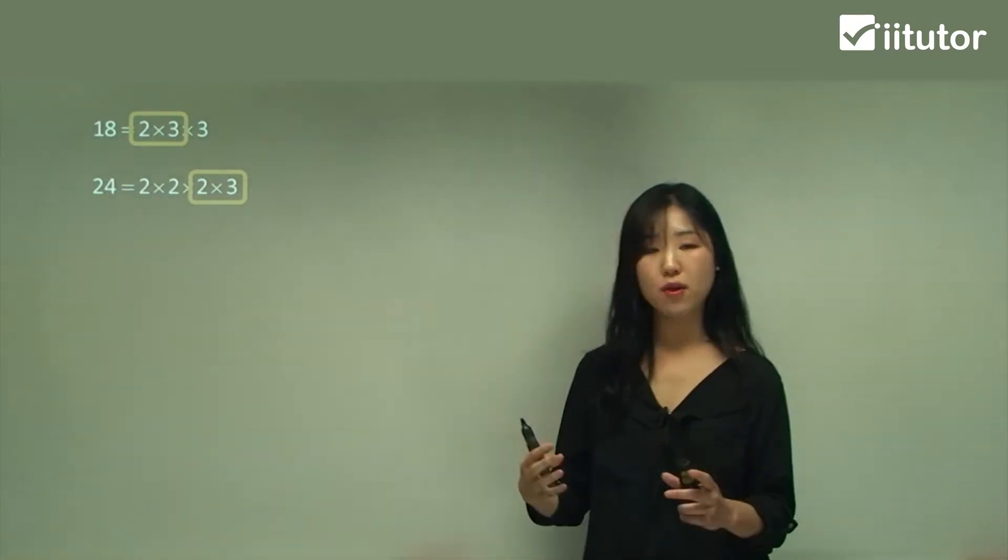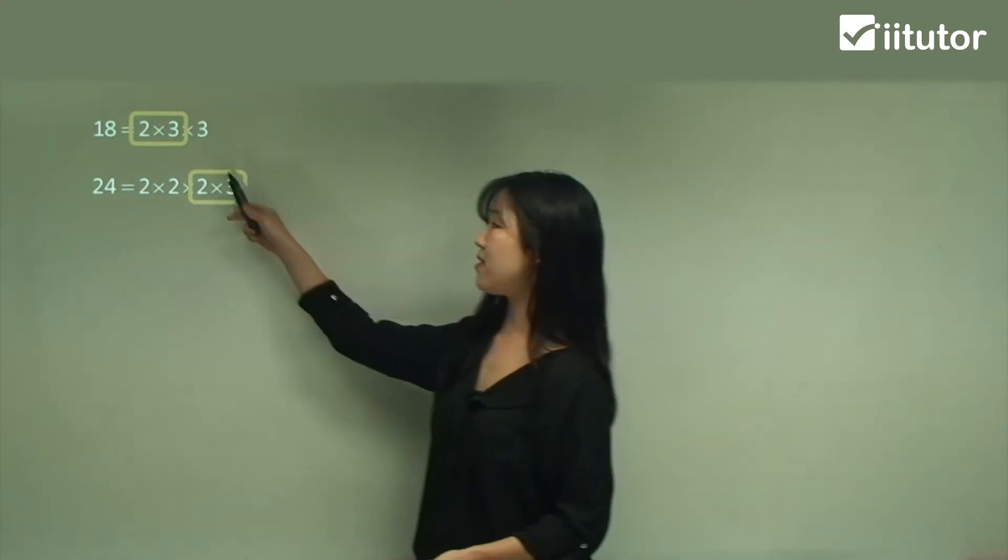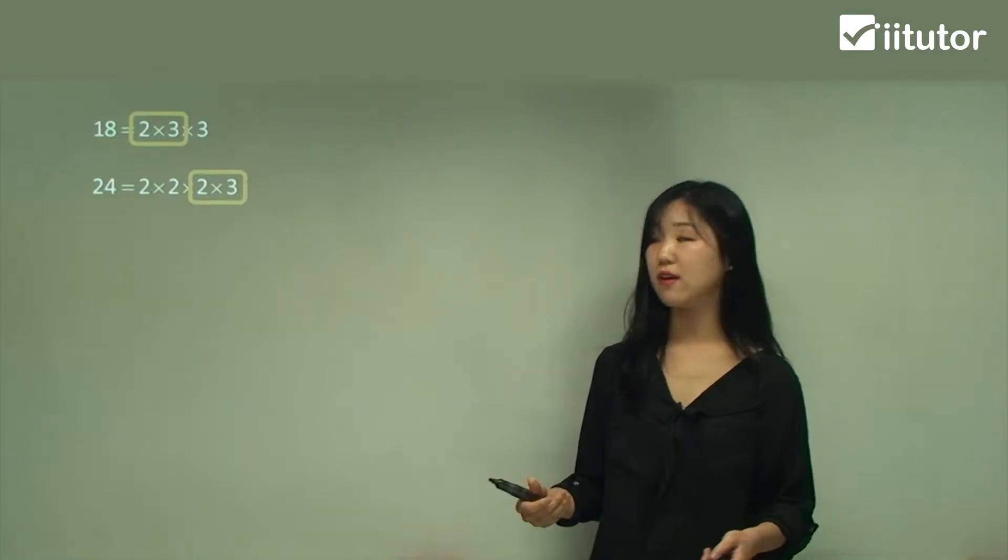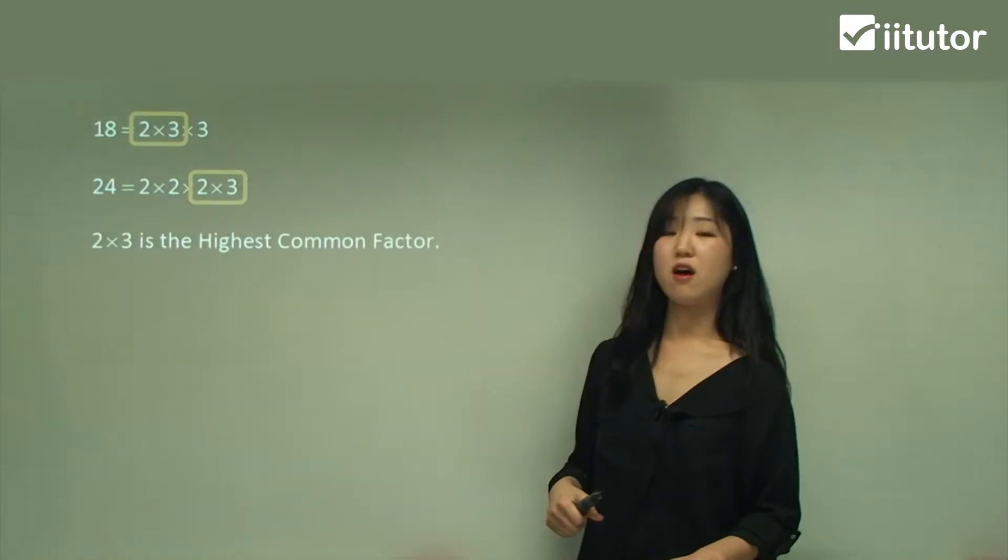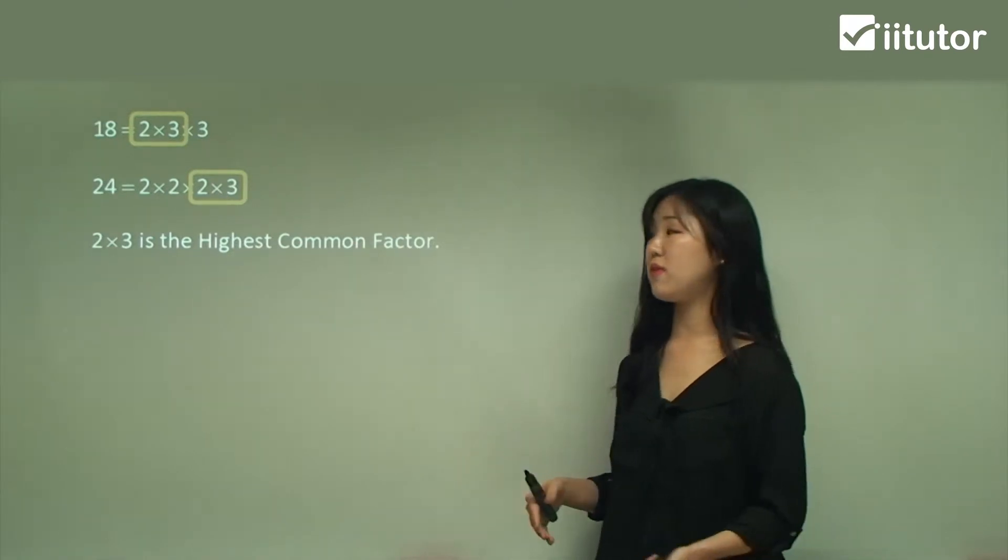You just circle what's common for both cases, and that is the highest common factor. Whatever's common, circle it all and that's the highest common factor. So 2 times 3 is the highest common factor, which you can simplify to get 6.